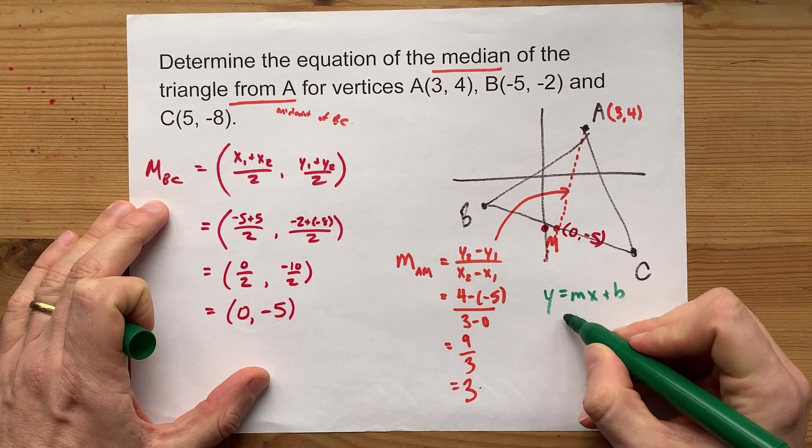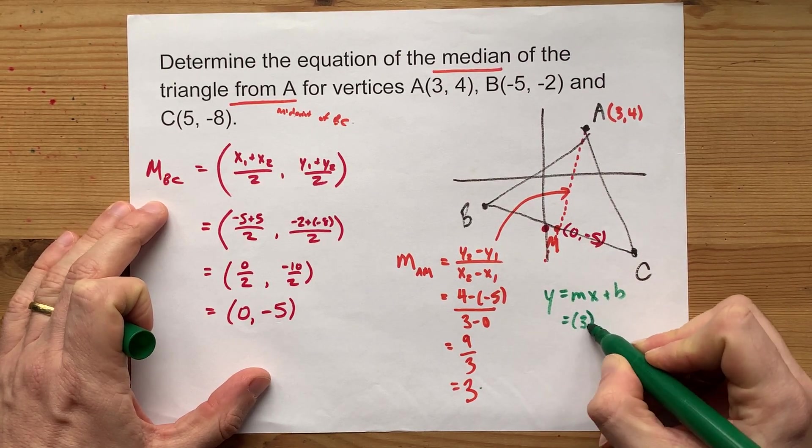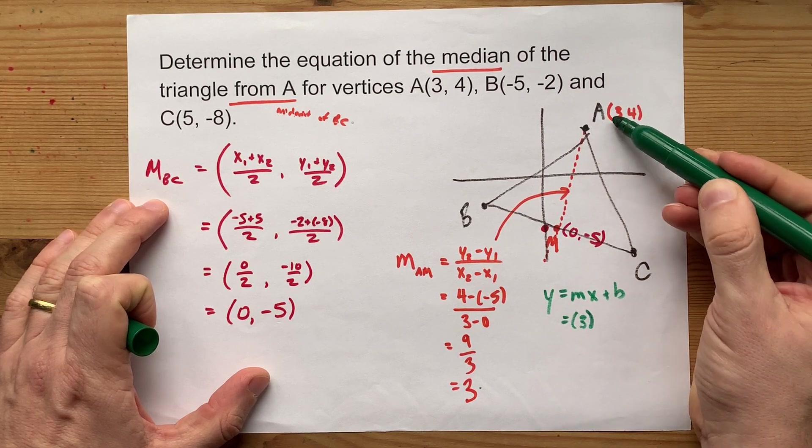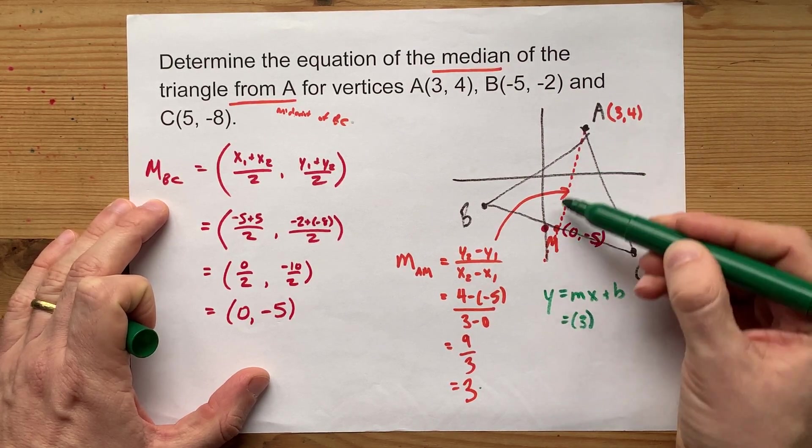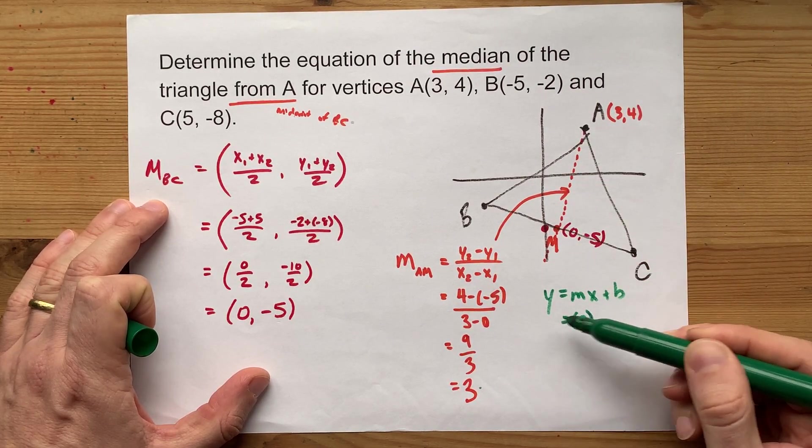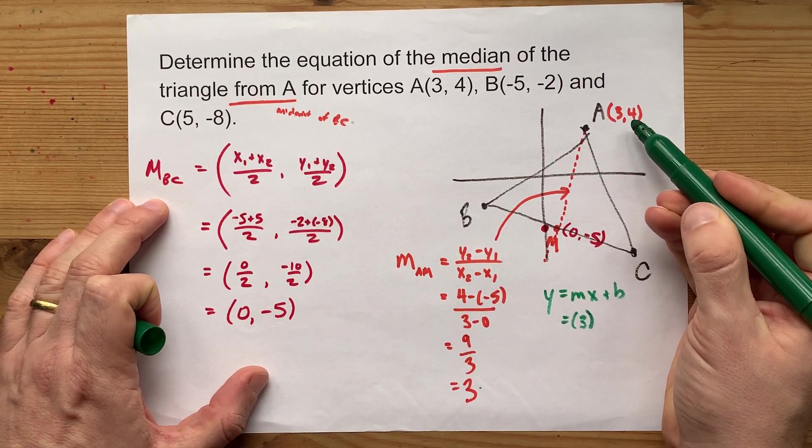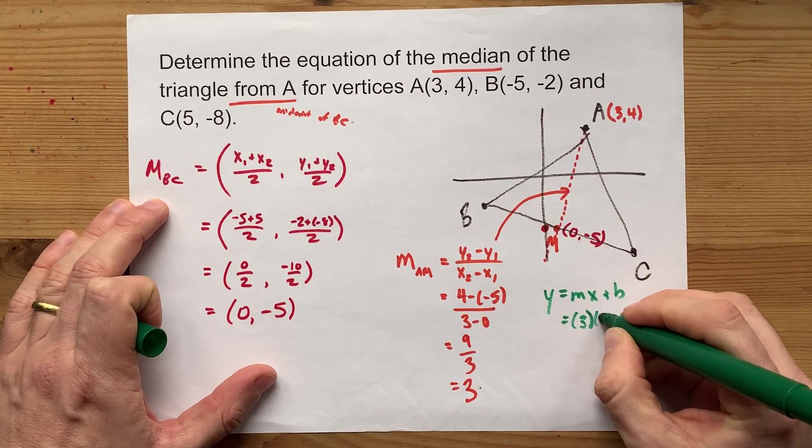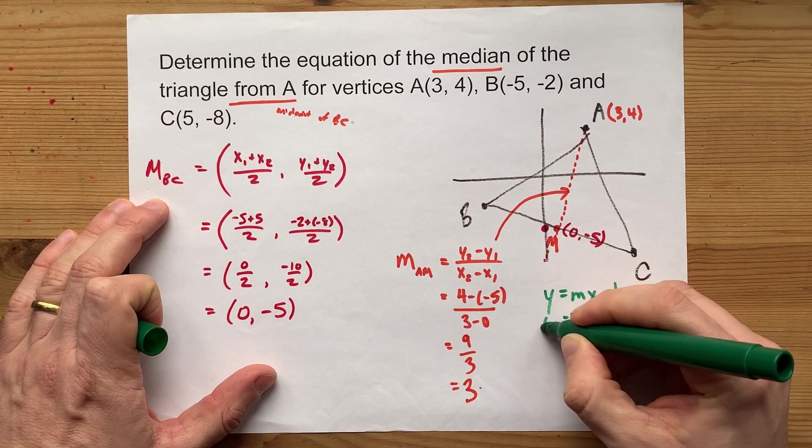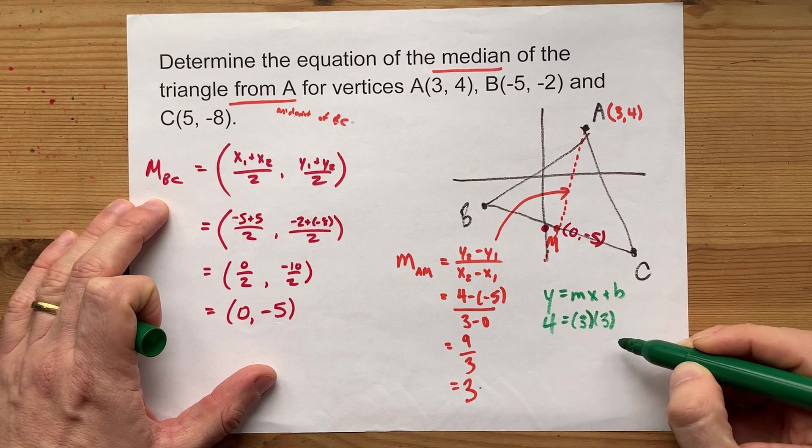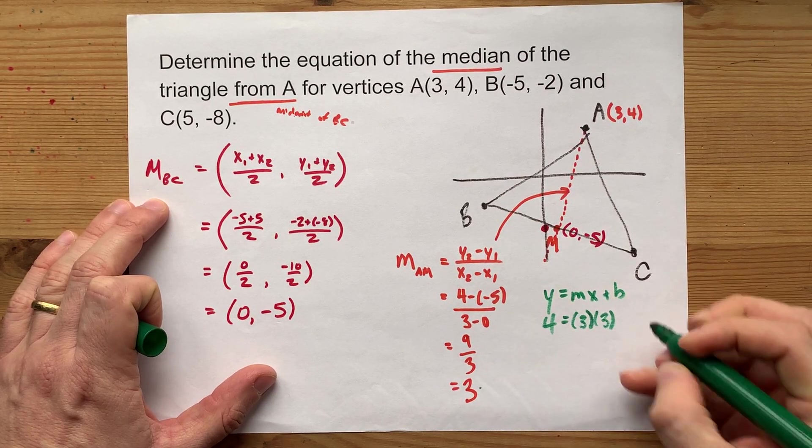And I plug in my slope that's going to go in where m is. And then I choose either of these points, A or M, the two points that were on the line to plug in for x and y. That'll let me solve for b. I'm going to choose A. My x there is 3, and my y there is 4. Notice how I plugged in 3 and 4 for x and y. And I plugged in 3 for m.